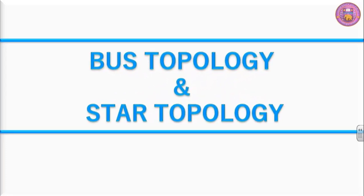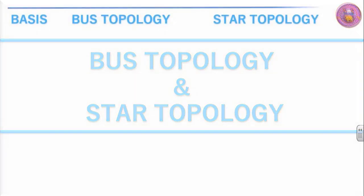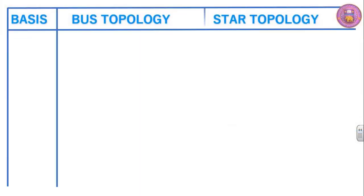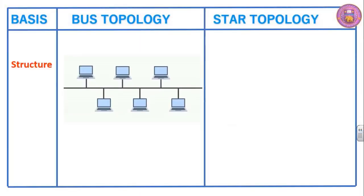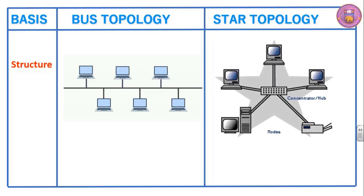Now we shall make a distinction between bus topology and star topology. The structure of bus topology has one main cable to which a number of computers are connected. In the case of star topology the structure is in the form of a star, but in reality it may not look like a star formation.